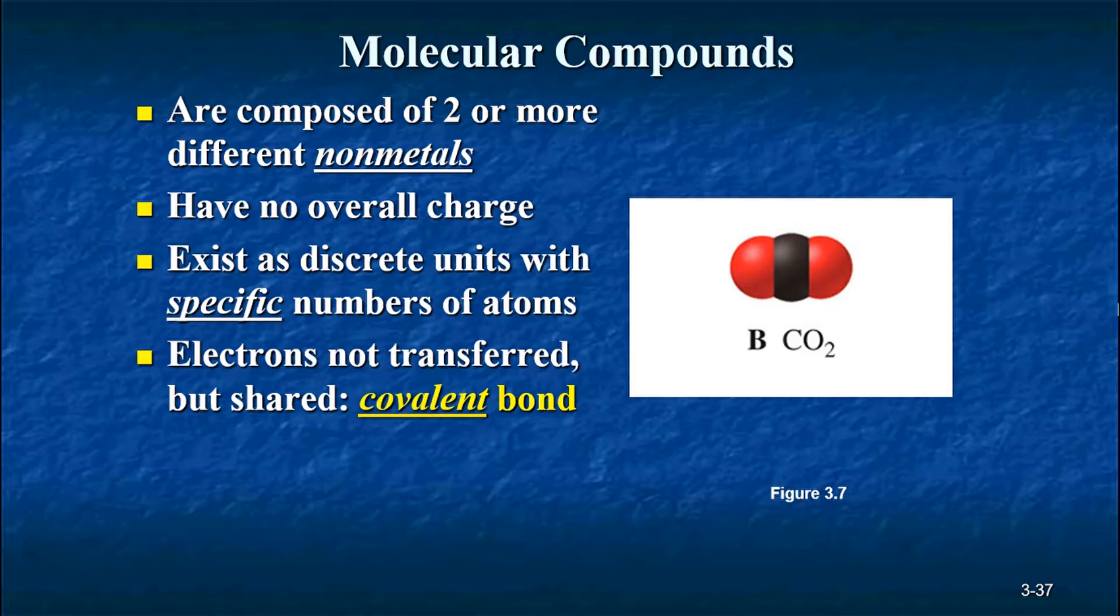They exist as discrete units with specific numbers of atoms, unlike ionic compounds which exist as a multiple three-dimensional array of ions, the number of which depends on the size of the sample. In the case of a molecular compound, the electrons are not transferred. In other words, you don't have an atom with less electrons than one with more electrons with a positive and negative charge. In this case, electrons are shared between the atoms. We're going to call that type of link a covalent bond and we'll study these in more detail later in the semester.